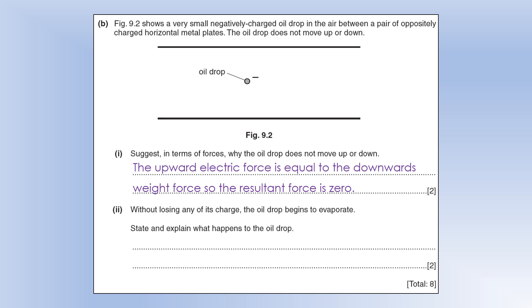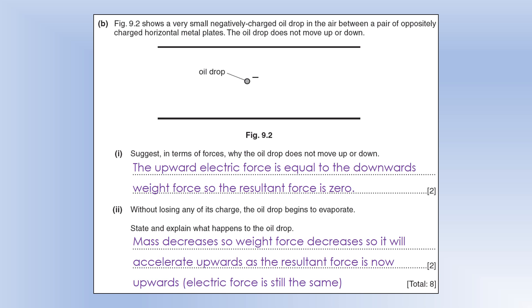Without losing any of its charge, the oil drop begins to evaporate. State and explain what happens to the oil drop. If it's evaporating, its mass is going to decrease, so its weight force decreases. Now it's going to accelerate upwards because the resultant force is now upwards. The electric force hasn't changed because the charge is still the same.